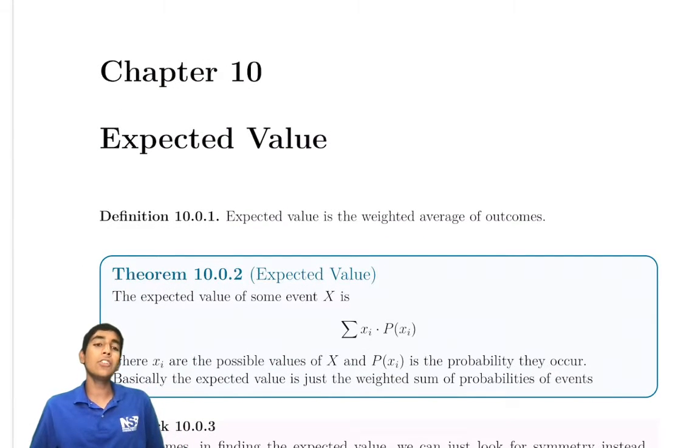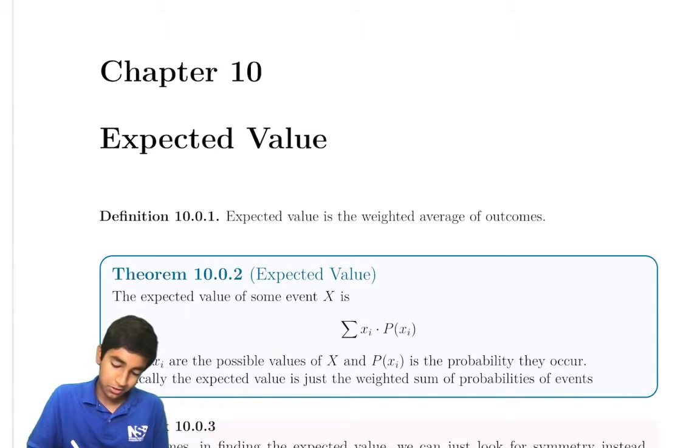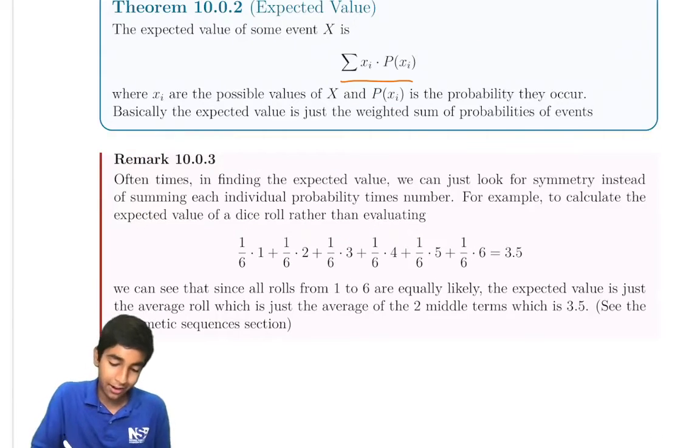Expected value is just a weighted average of outcomes. And how do we calculate this? Let's see how it actually is in an example because I assure you it's not that complicated as this looks.